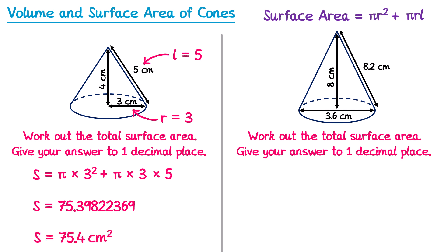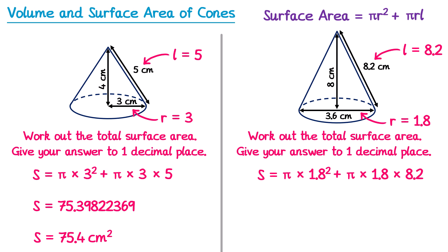For the second cone: surface area = π × r squared. The diameter is 3.6, so the radius is 1.8. So π × 1.8 squared, plus the curved surface area: π × 1.8 × L, where L is 8.2. Typing all of this into the calculator and rounding to one decimal place gives 56.5 centimetres squared.